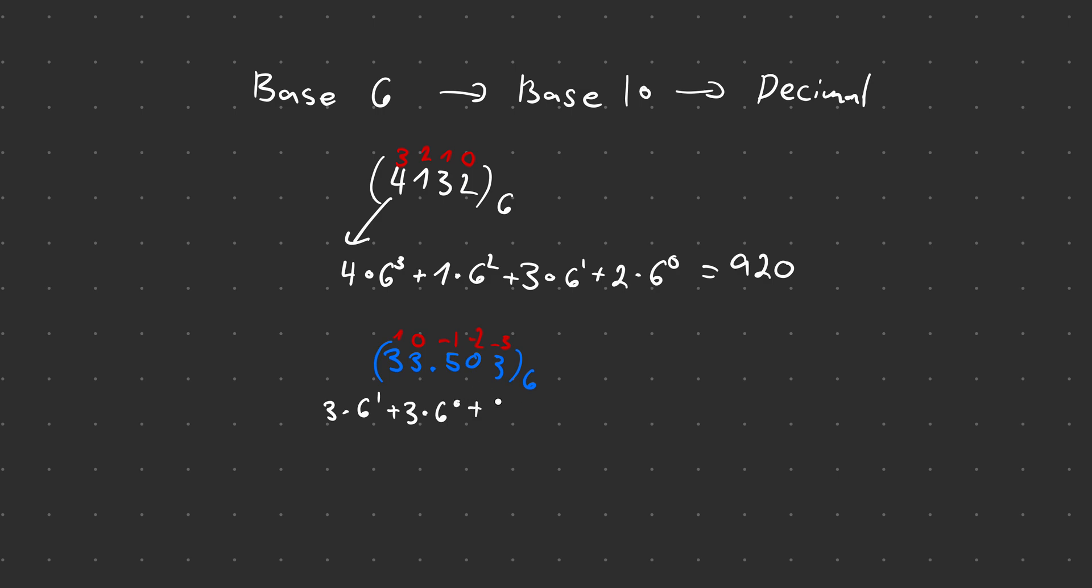Then we do plus, and then we take this 5, 5 times 6 to the negative 1 power. And then we plus 0 times 6 to the minus 2 power. And then we're going to take this 3 here and put 3 times 6 to the negative 3 power.